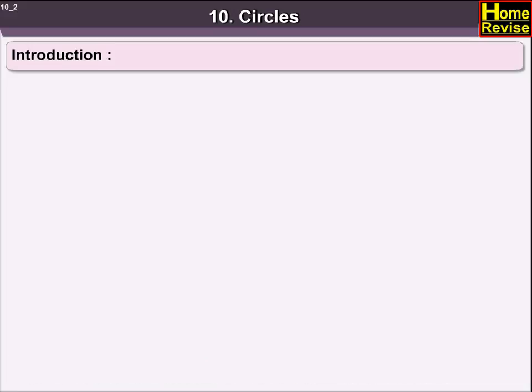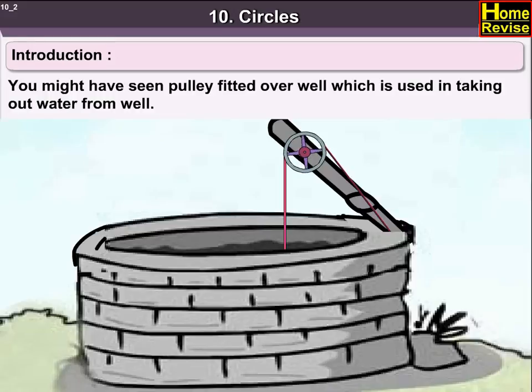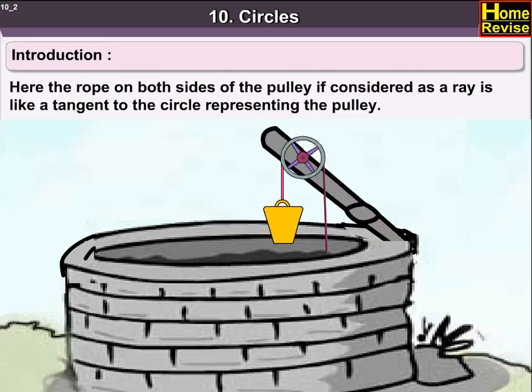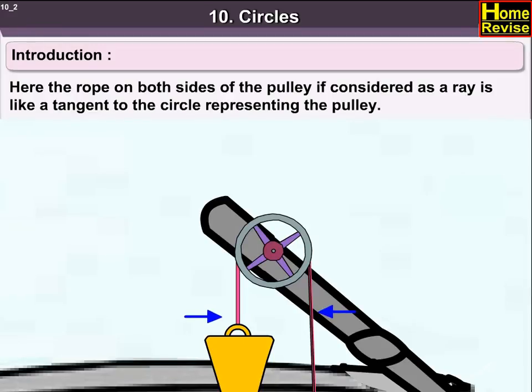Dear friends, you might have seen a pulley fitted over a well which is used in taking out water from the well. Here, the rope on both sides of the pulley is considered as a ray, like a tangent to the circle representing the pulley.